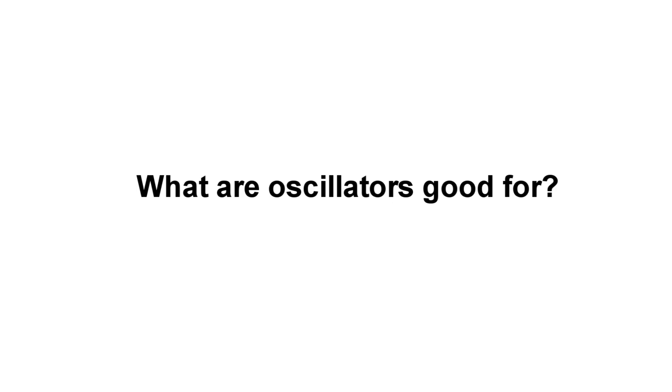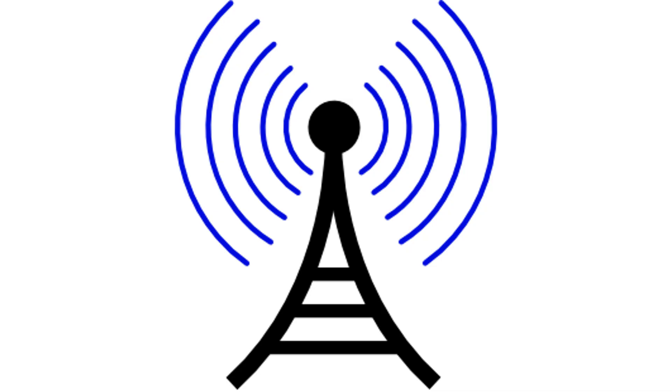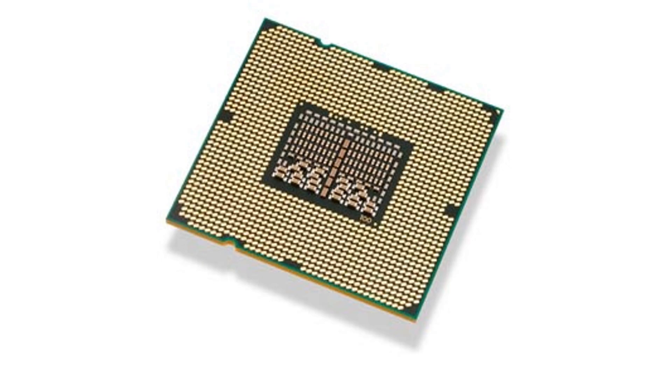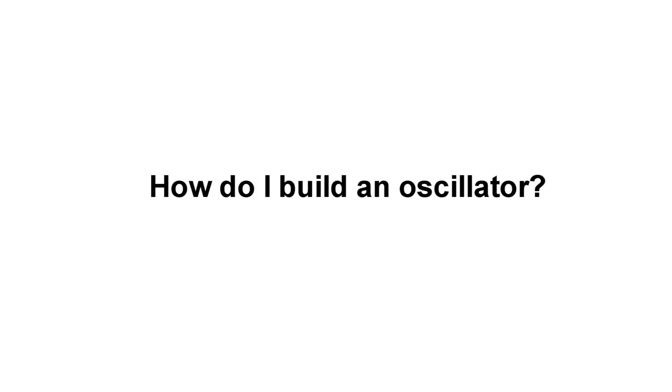Now what are oscillators good for? Oscillators are used all the time in electronic designs. Common uses include generating radio waves, tone generators, generating counters to keep track of time, and generating clock signals to control the speed of digital processors, including the computer that you're using right now. So now that you know that oscillators are awesome, how do you build one?